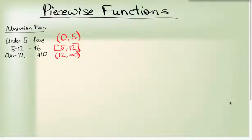Now if I were to rewrite this as an actual piecewise function, let's call it function C for cost with respect to age. Now I'm going to have to write one piece for each of those intervals. So if you're under five, the cost is zero dollars, and that is if age is an element of zero to five.